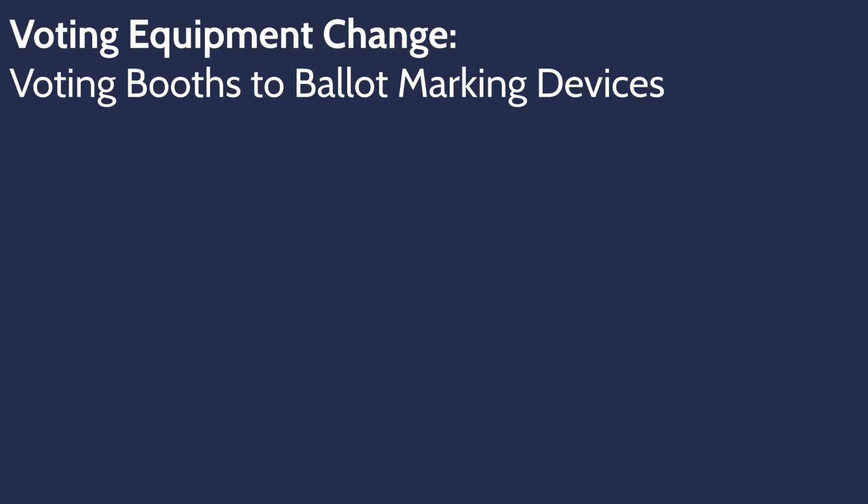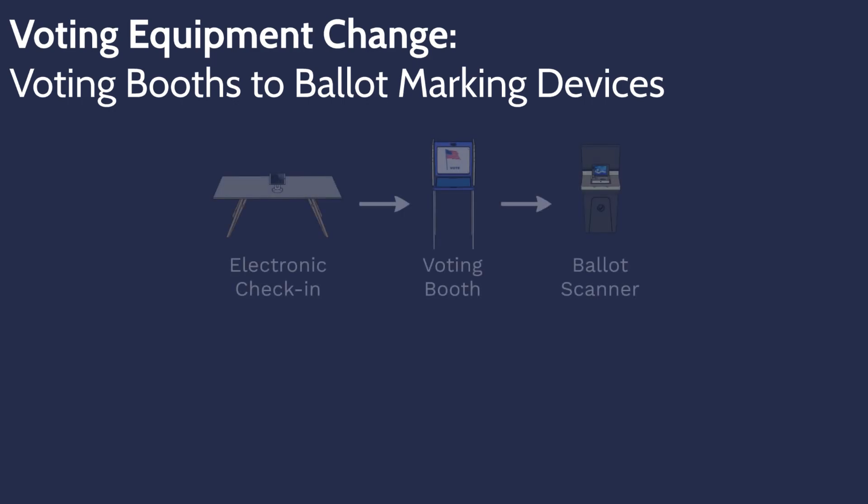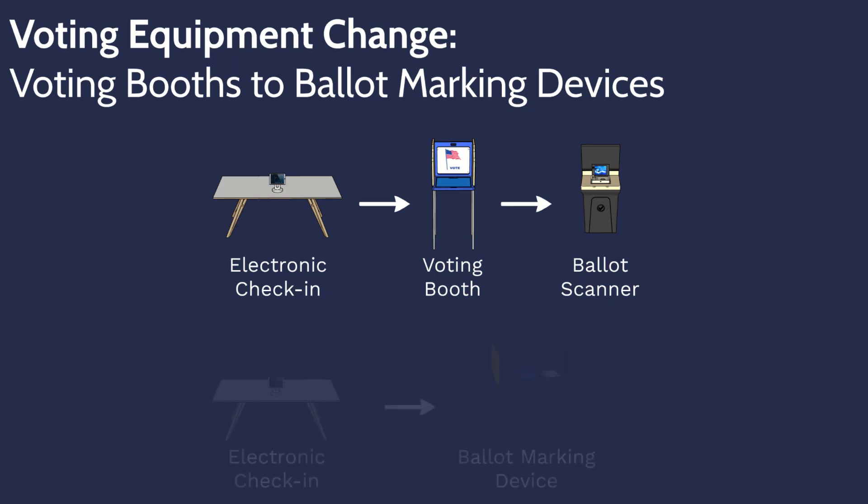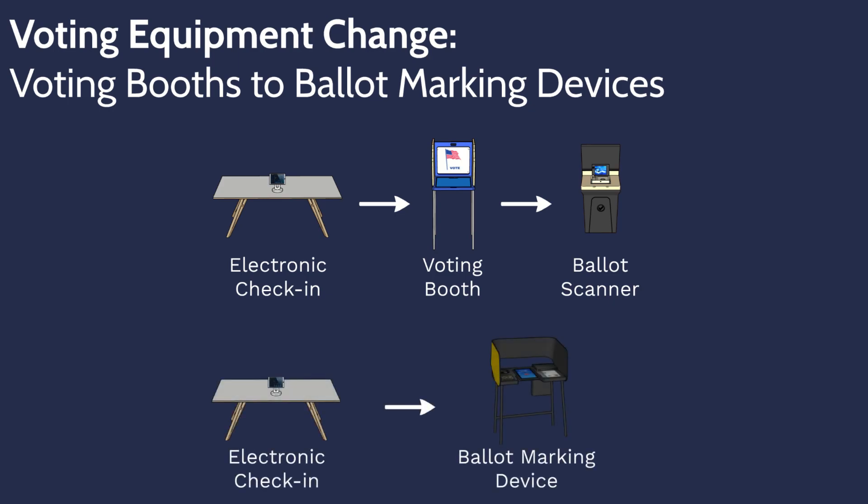In this video, we investigate the effect of transitioning an existing three-step technology-based voting process to a two-step process. These voting processes differ in that the three-step process uses electronic poll books, hand-marked paper ballots, and a digital scanner, while the two-step process uses electronic poll books and a digital ballot marking device.